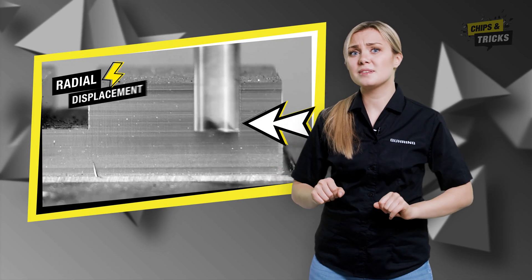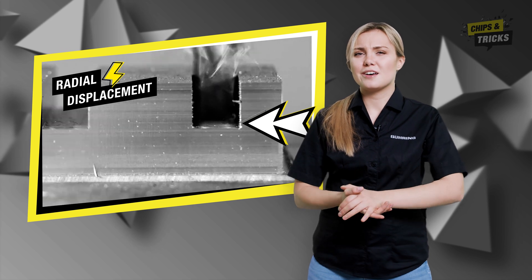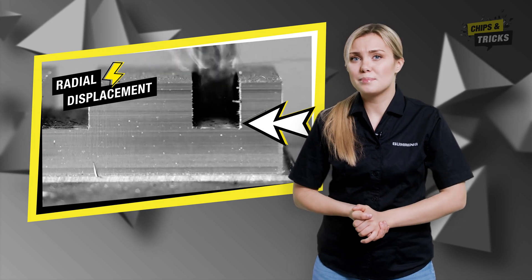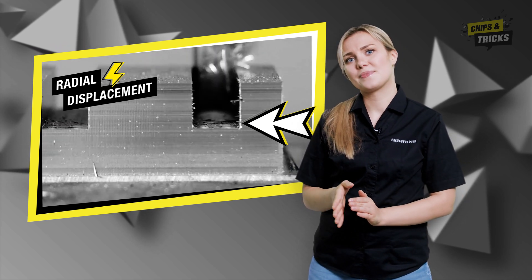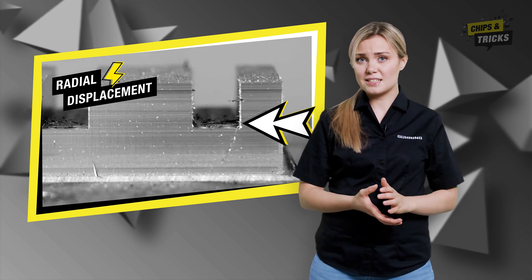During milling we have a rotating tool and a lateral cutting movement. This results in radial displacement — the tool is pushed away from the side of the material. This is most obvious when the milling cutter starts to cut. Radial displacement occurs as soon as the milling cutter touches the workpiece and pushes it to the side, continuing until the cutter leaves the workpiece again.